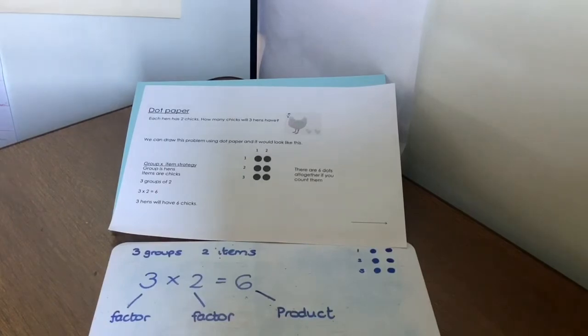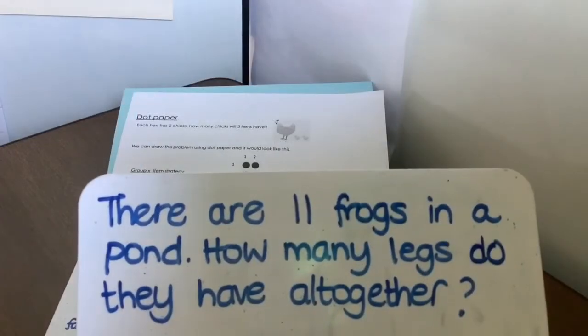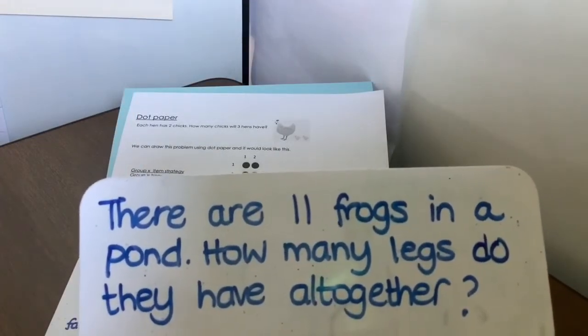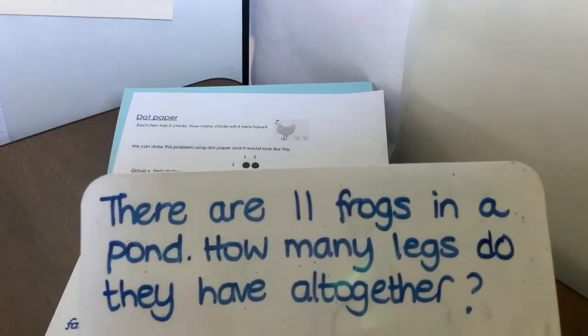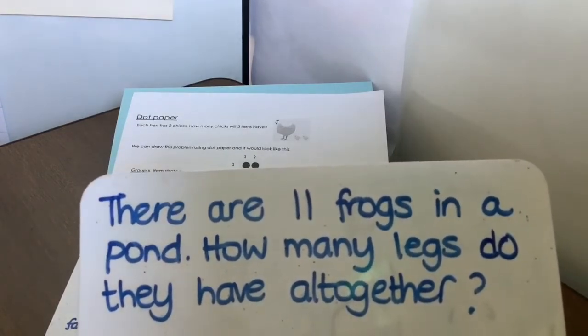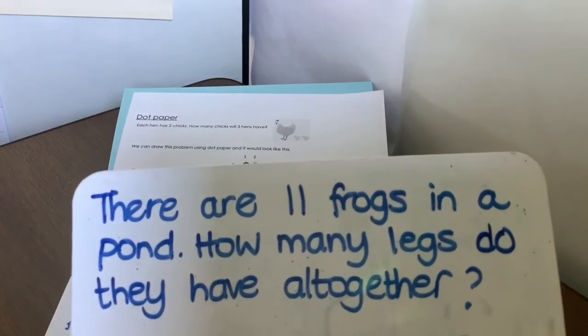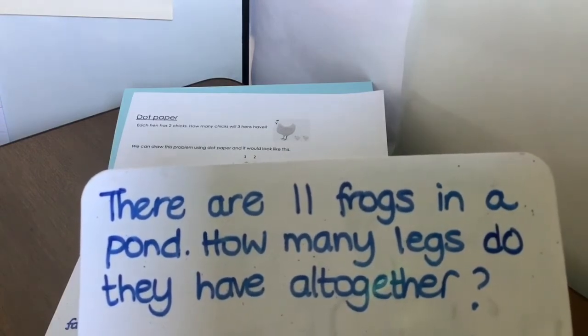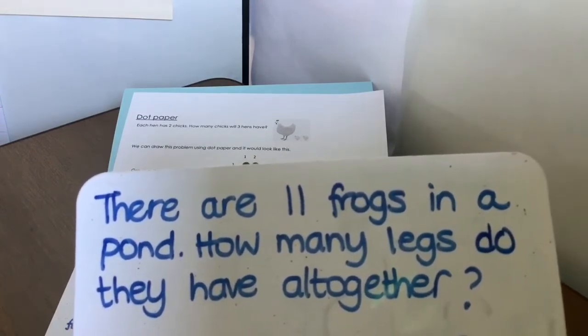So you've just done a really simple dot paper question. Let's try this one. There are 11 frogs in a pond. Now we know frogs have 4 legs. So how many legs do they have all together? Can you prove it in dot paper for me? Pause the video and then come back in a minute and we'll compare.